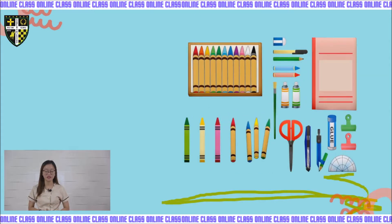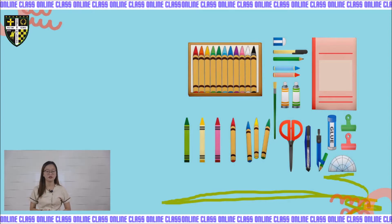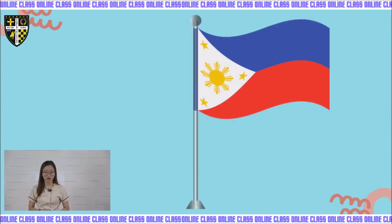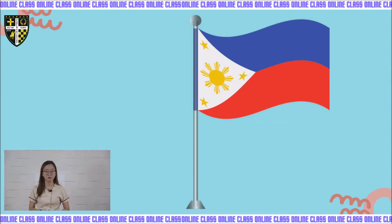Can you see these things? The crayons, the scissors, and the other things that you can see are also found in the school. How about this one? Do you know what this is, class? This is a flagpole. And we can see this in our school also.